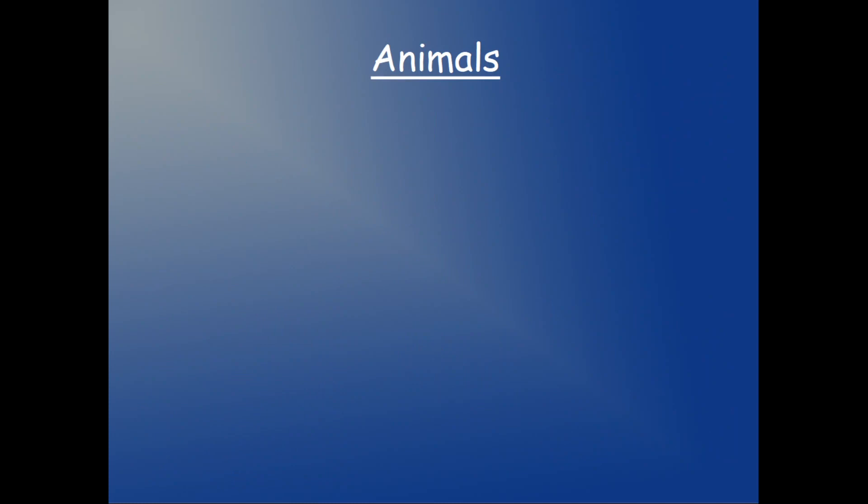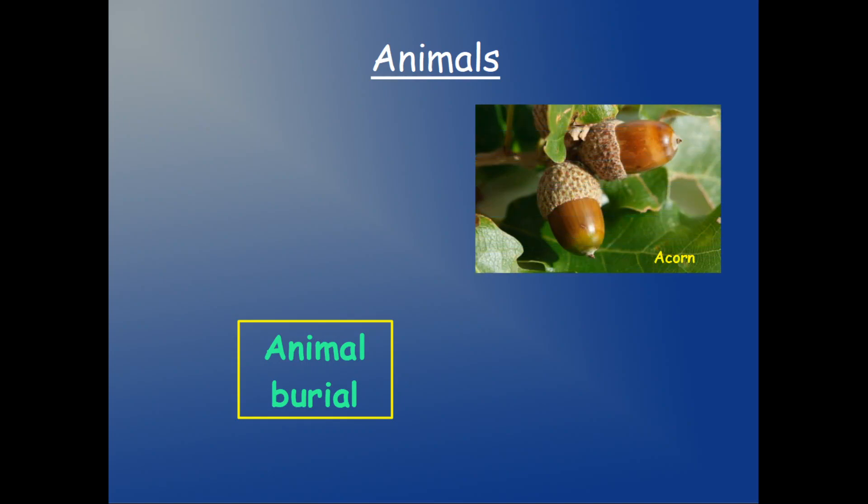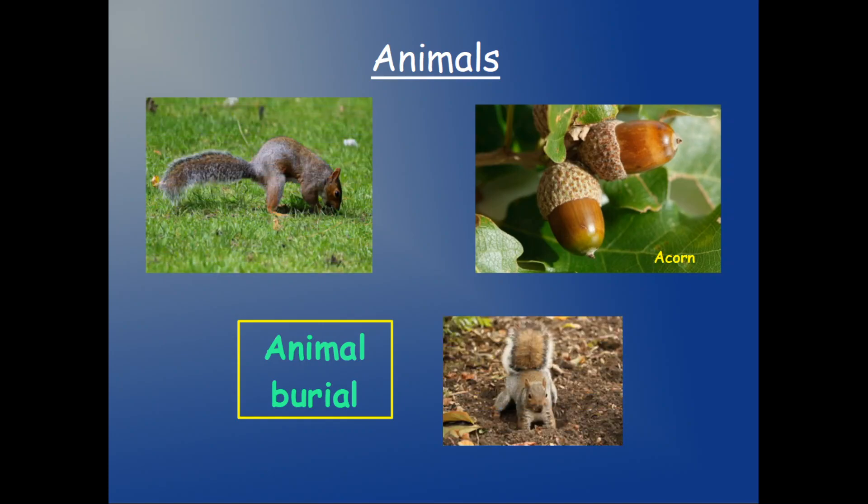And finally, the last technique that we're going to learn is animal burial. What does it mean? Let me explain. We have, for example, acorns. There are some animals who love acorns. Do you know them? I'm sure, yes. These little ones: squirrels. They're going to dig a hole and put the acorns in it.